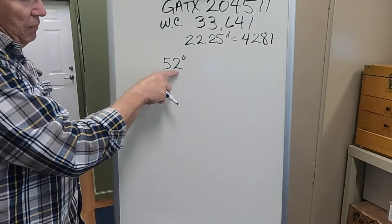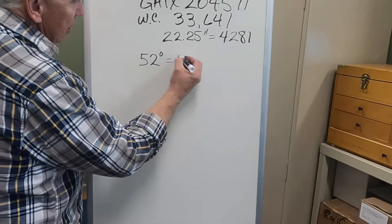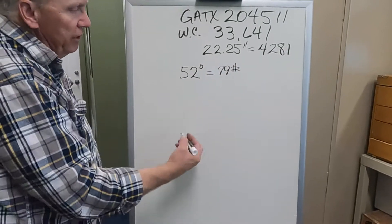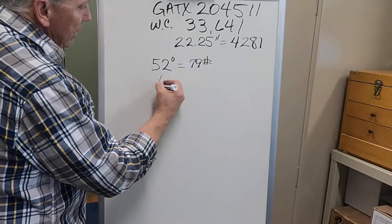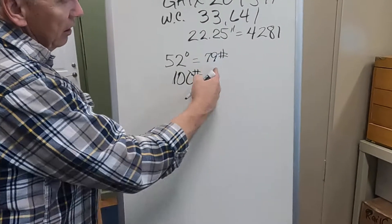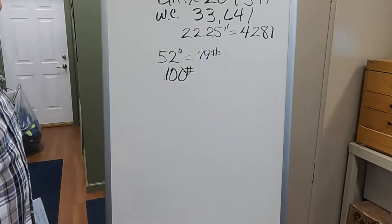And when you look that chart up at 52 degrees, it says propane should have a pressure of 79 pounds. When we took our actual reading on the car, we came up with 100 pounds. 21 pounds, we're in the ballpark. The rough rule of thumb is about 50 pounds.